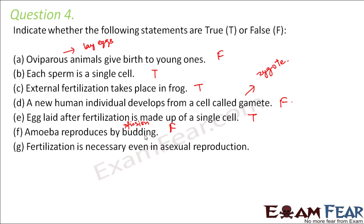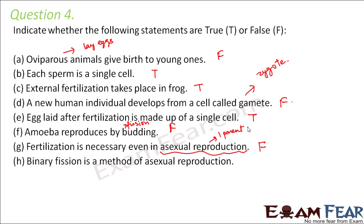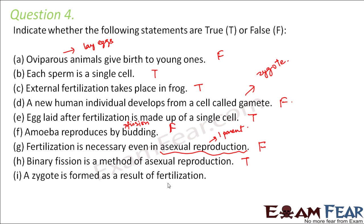Fertilization is necessary even in asexual reproduction — that is absolutely false. In asexual reproduction we don't even need male and female; only one parent is enough. So there is no concept of a male gamete and a female gamete, so there is no fertilization. Binary fission is a method of asexual reproduction — yes, absolutely true. In binary fission, one organism splits into two equal halves and those two halves form two new organisms. A zygote is formed as a result of fertilization — yes, absolutely true.